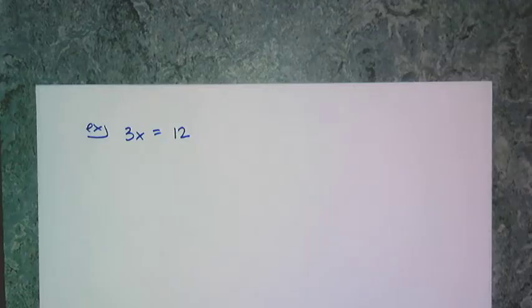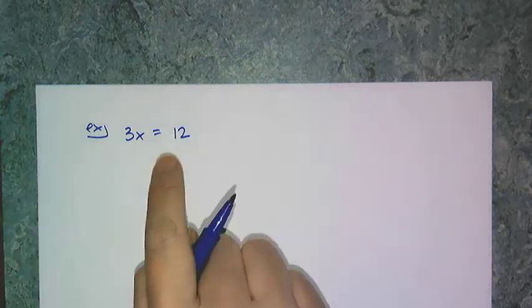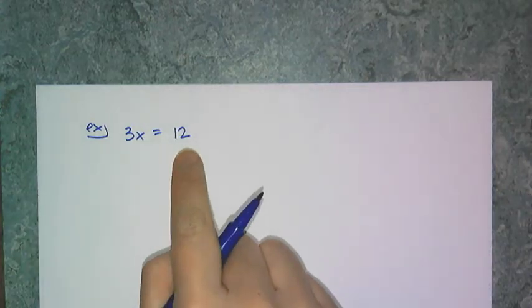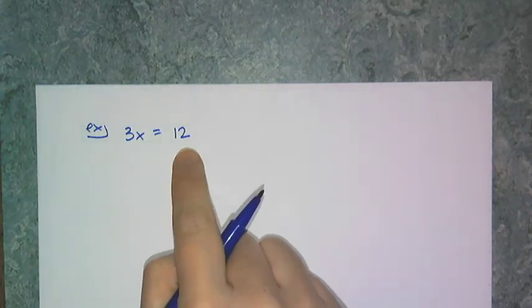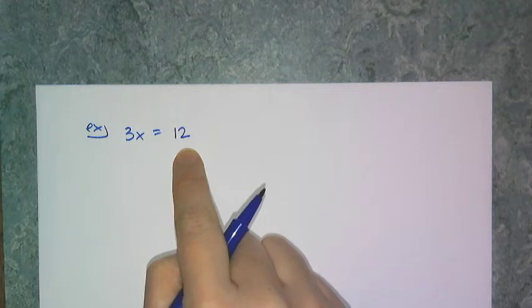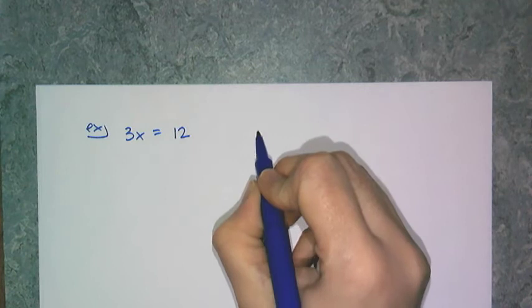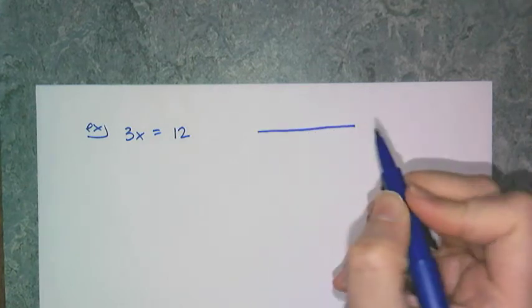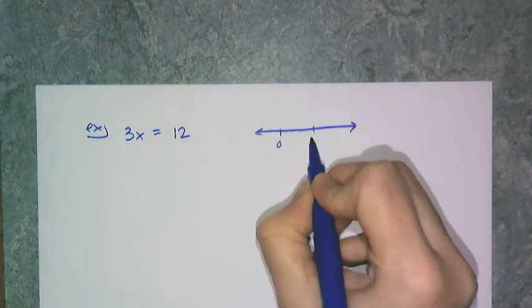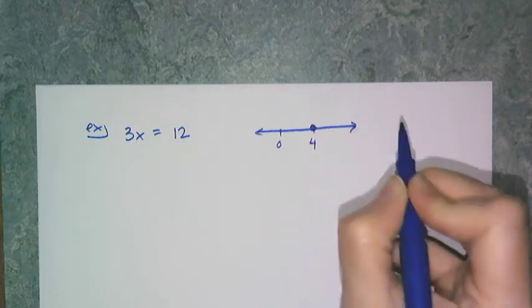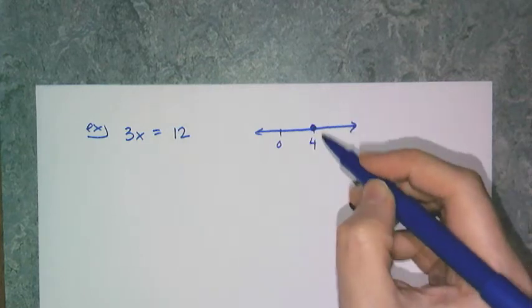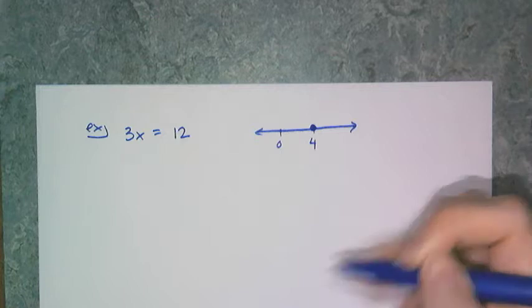Let's backtrack and look at this super easy equation to solve: 3x equals 12. When you solve, remember, it's to find the solution set, or every value of x that makes this true. If I graph this answer on a number line, I have zero and four, so my solution set is four.